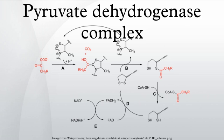Regulation: Pyrovate dehydrogenase is inhibited when one or more of the three following ratios are increased: ATP/ADP, NADH/NAD+, and acetyl-CoA/CoA.